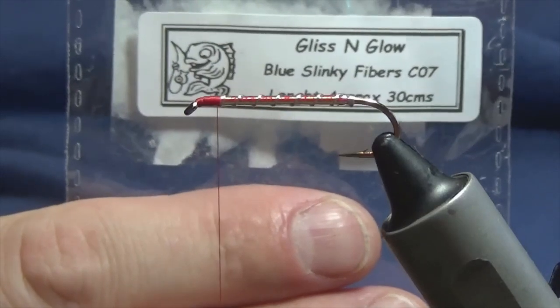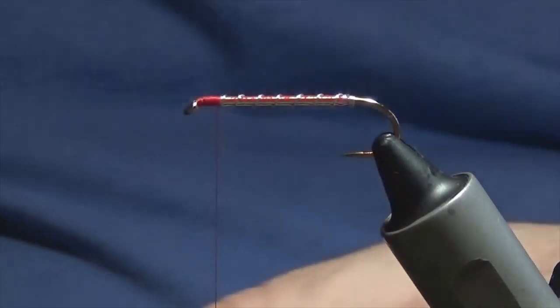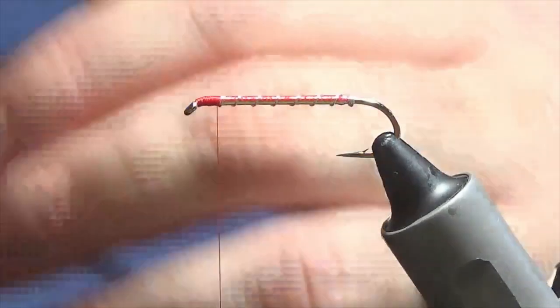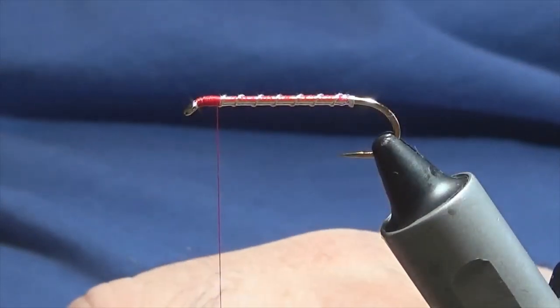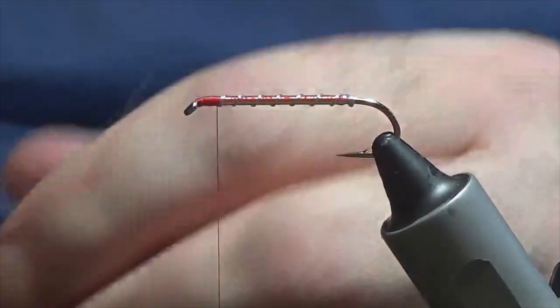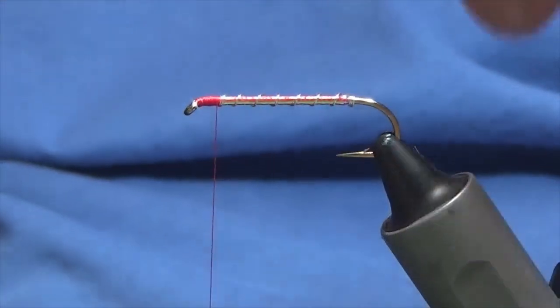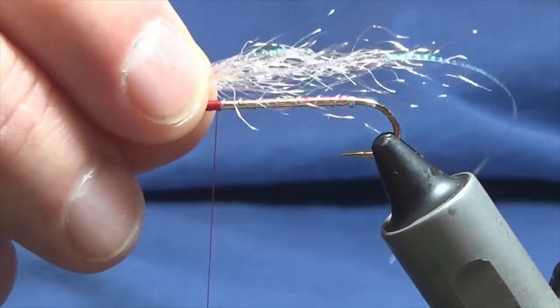Now I just want to take a length of it off. Just offer it up to the hook. Now the underwing, there's going to be the under part, the underwing.